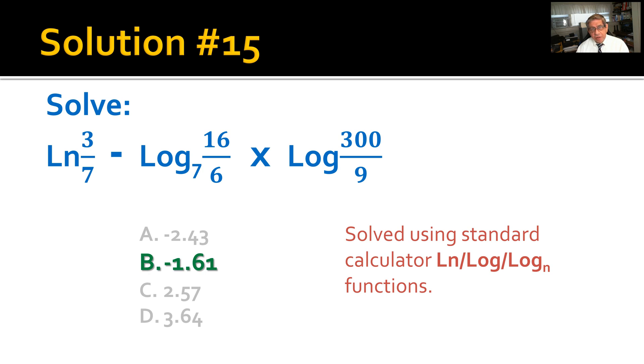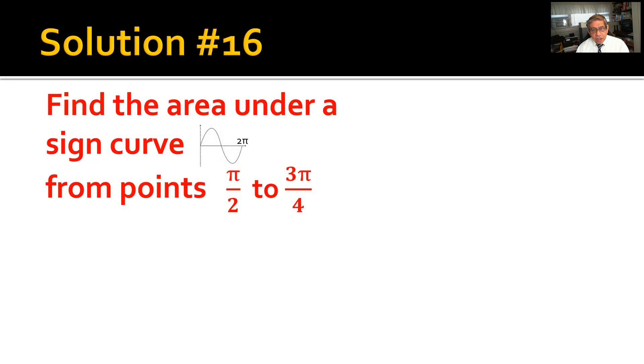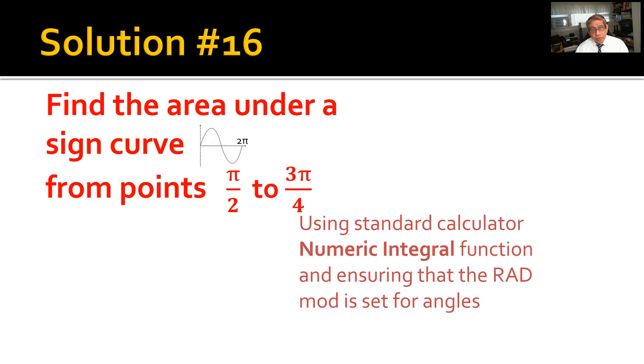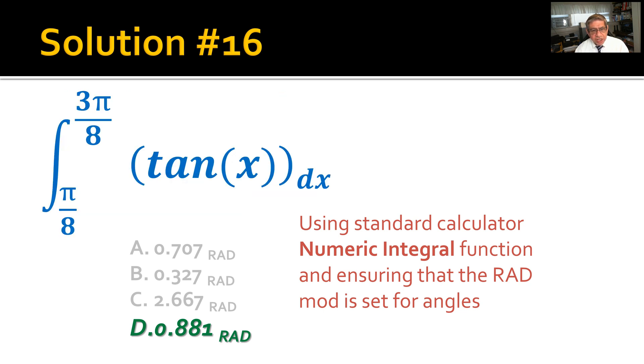Solution number 16: Find the area under a sine curve from points π/2 to 3π/4. We use a calculator numerical integration for this, but do make sure that your angles are set to radians, not degrees. The answer will be in this case 0.881 radians, rounded a little bit—D in this case. This is the original equation, and you'll see this actually in the calculator display when you type it in. When you hit enter, you will get that answer as described here.